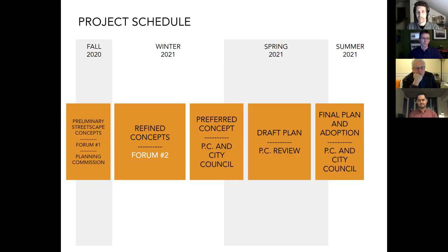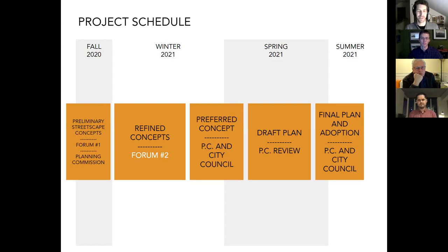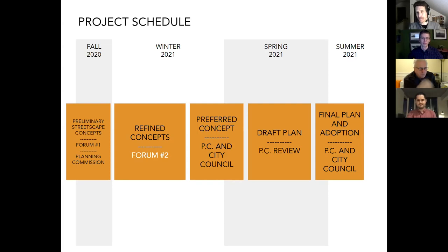We'll go talk to planning commission in early March and city council in early April to review that. Then in April, May, and June, getting into plan adoption and planning commission and city council review.